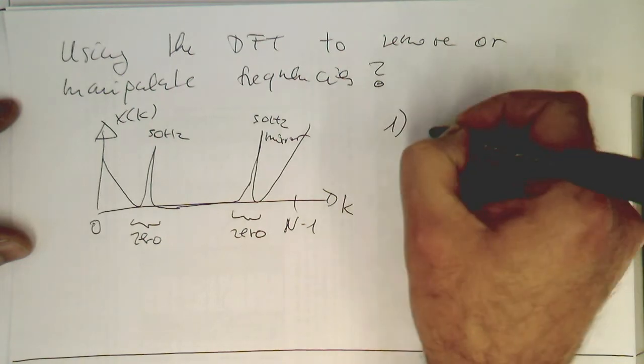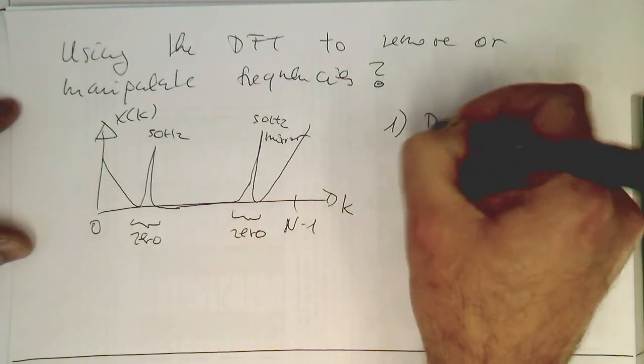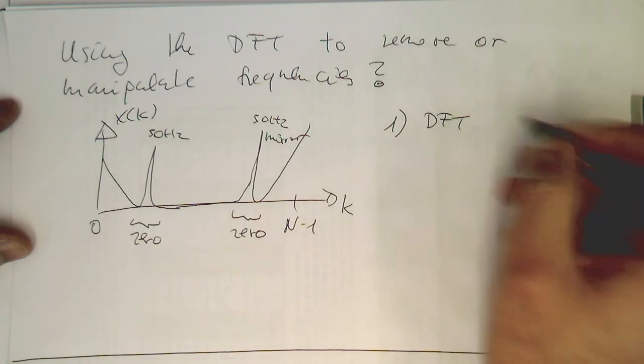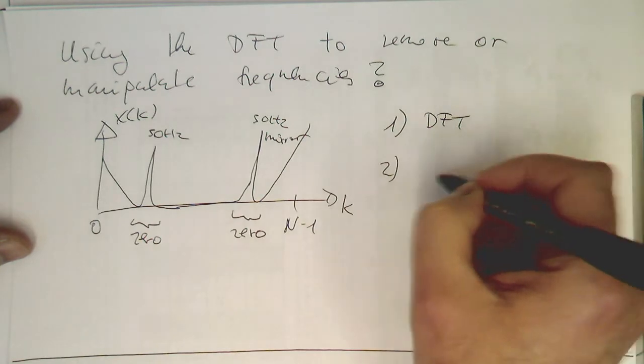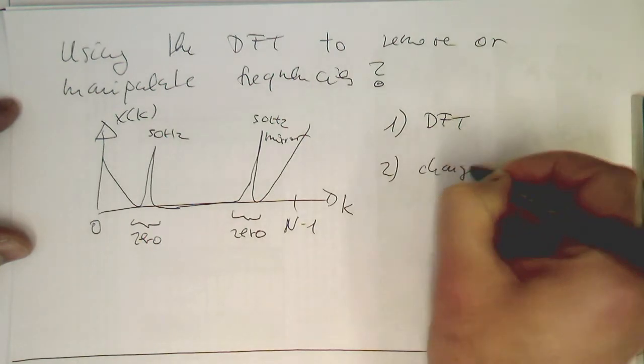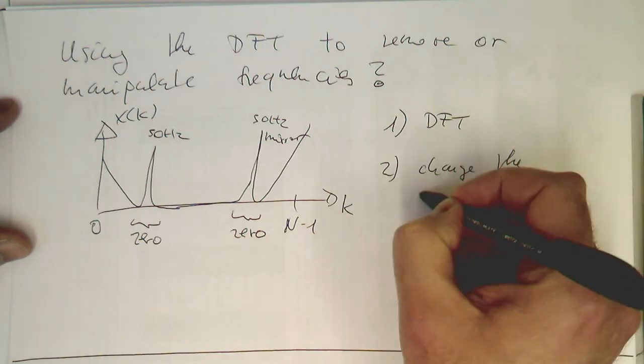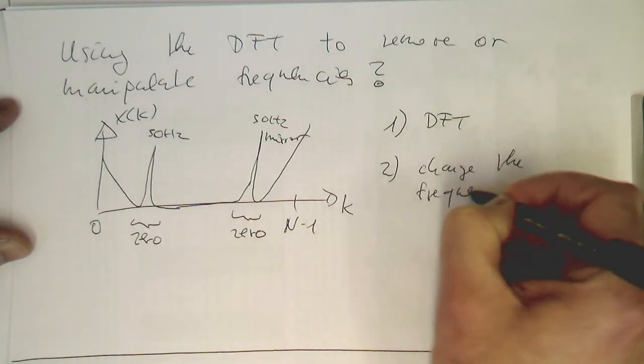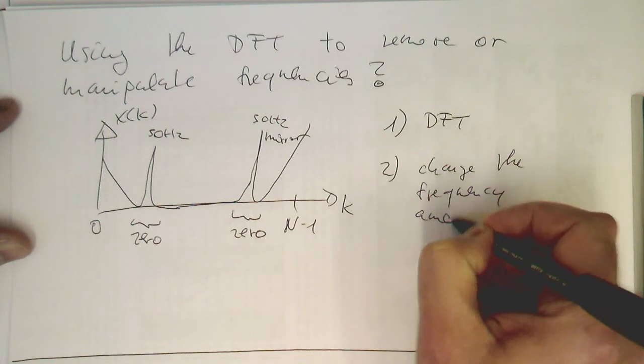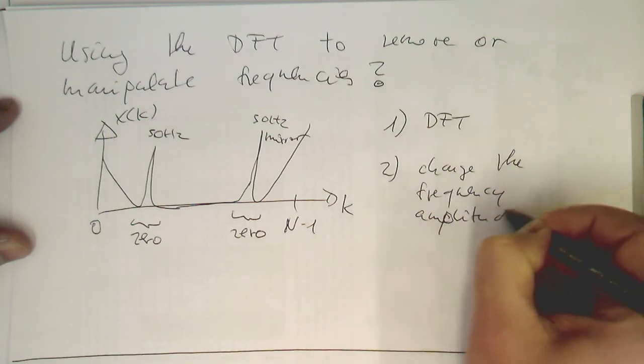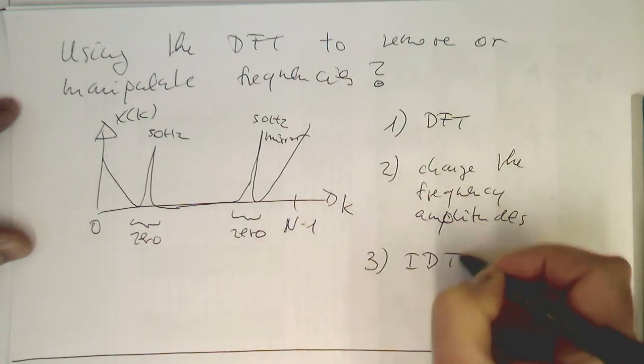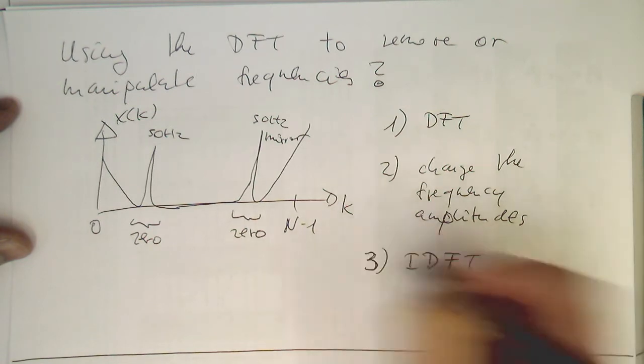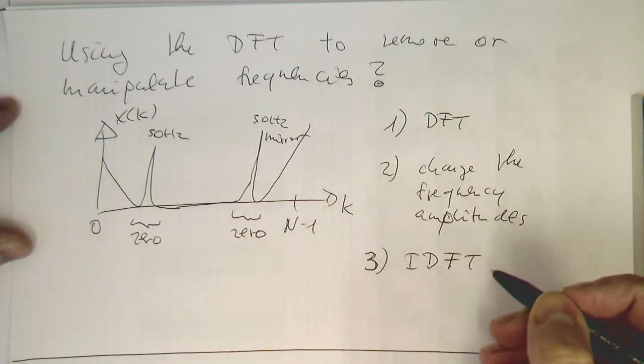So what we can do is, in steps, we use the DFT to transform this into the frequency domain. Then as the next step, we just change the frequency amplitudes. As a third step, we do an inverse discrete Fourier transform and then we've got our signal back.